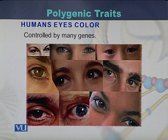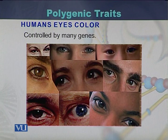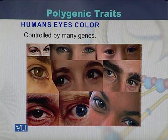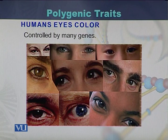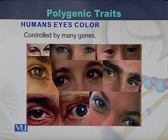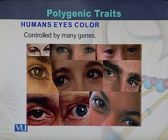The second example of polygenic traits is human eye color. There are different types of human eye color, and these eye colors are controlled by many genes. We can see variation from black up to brown, green, and blue. These are all colors of the human eyes, and this phenotype is called a polygenic trait, controlled by multiple genes.